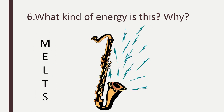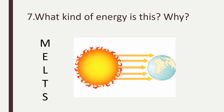What kind of energy is this and why? This is a musical instrument, and this musical instrument is creating vibrations. Those vibrations are sound energy — music. What kind of energy is this and why? Even though the sun produces multiple types of energy, this example shows thermal energy because I can see the sun rays and the heat that is being provided to Earth.